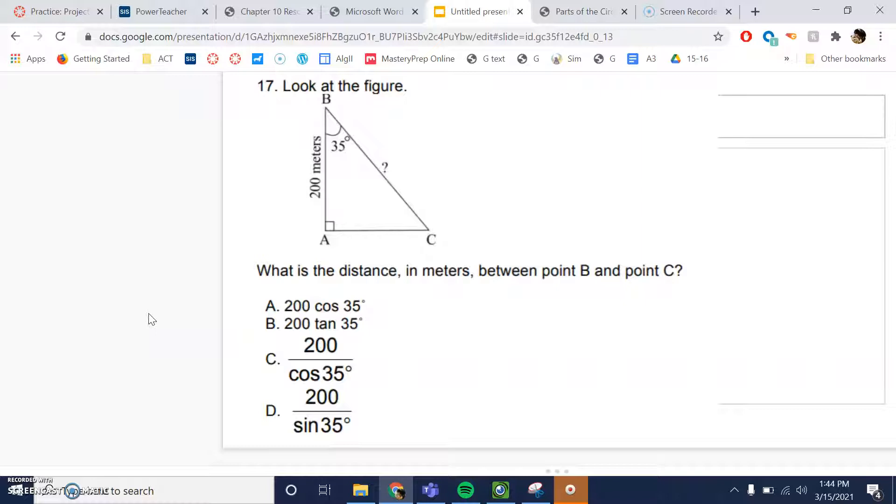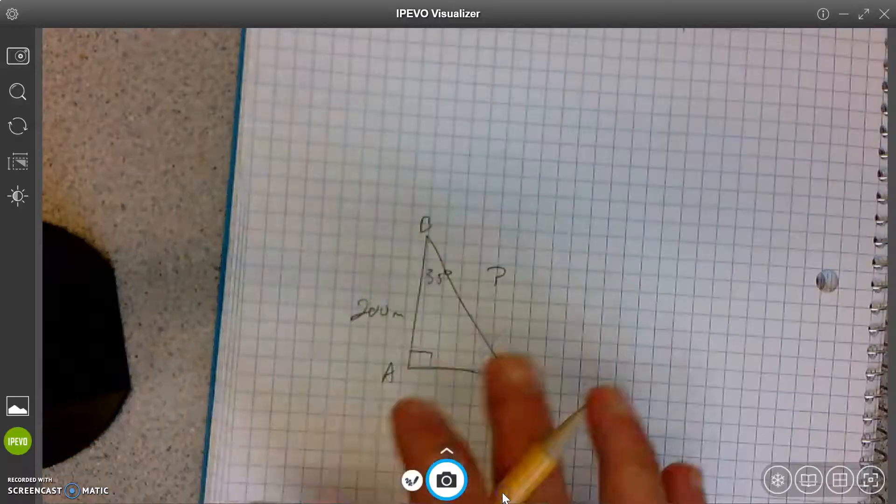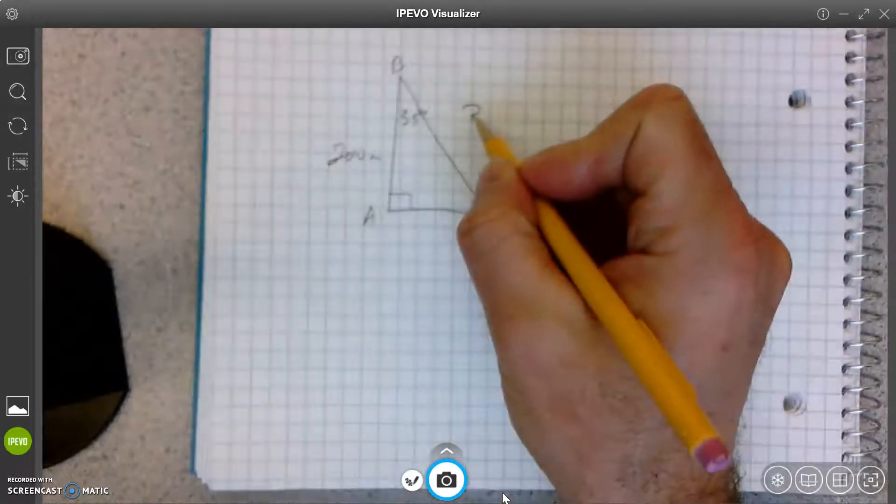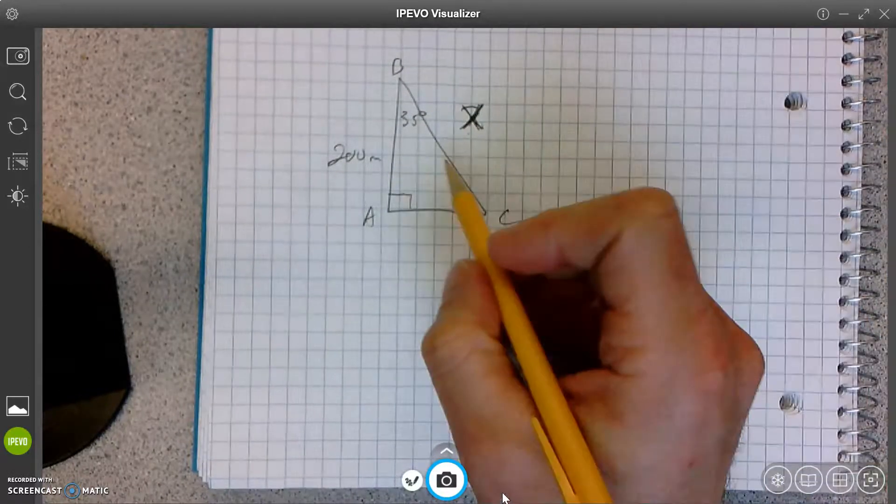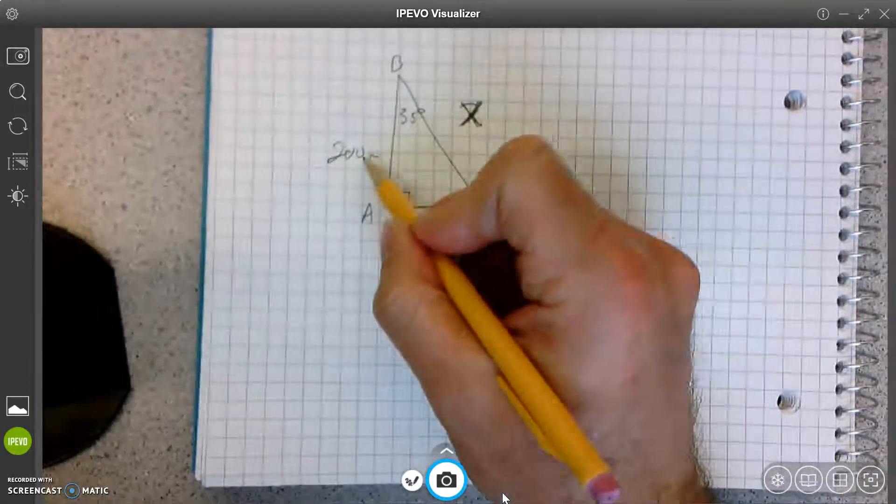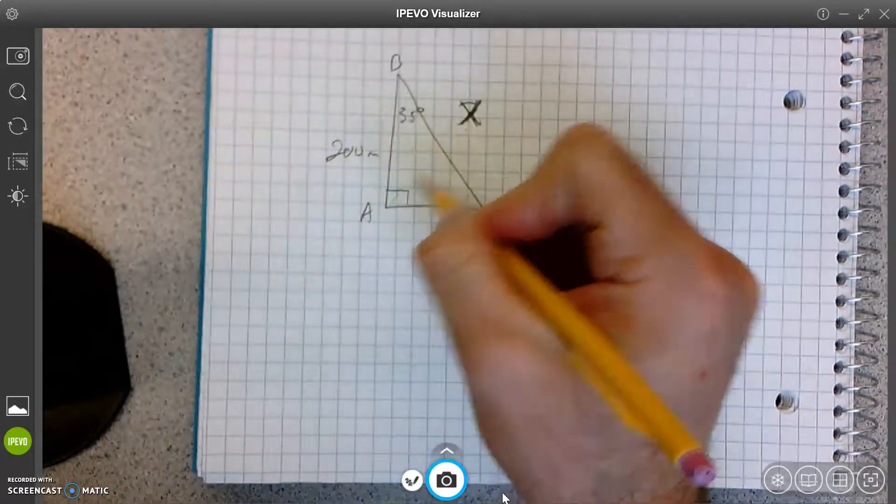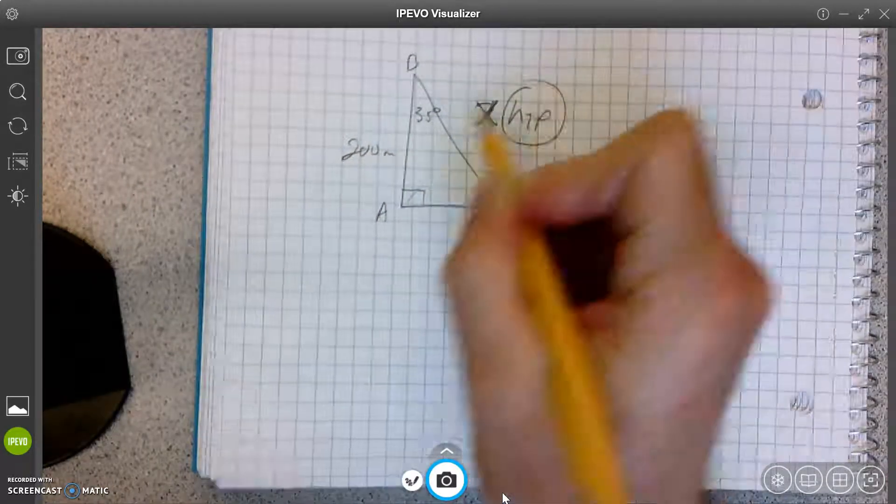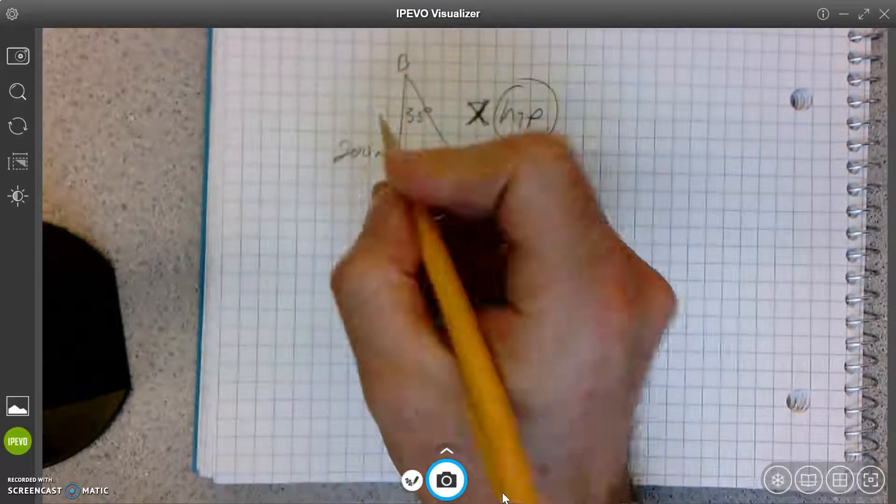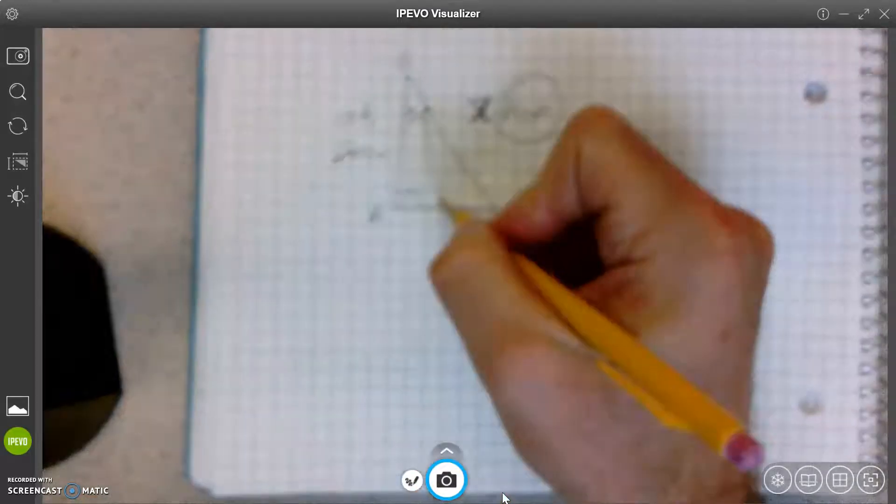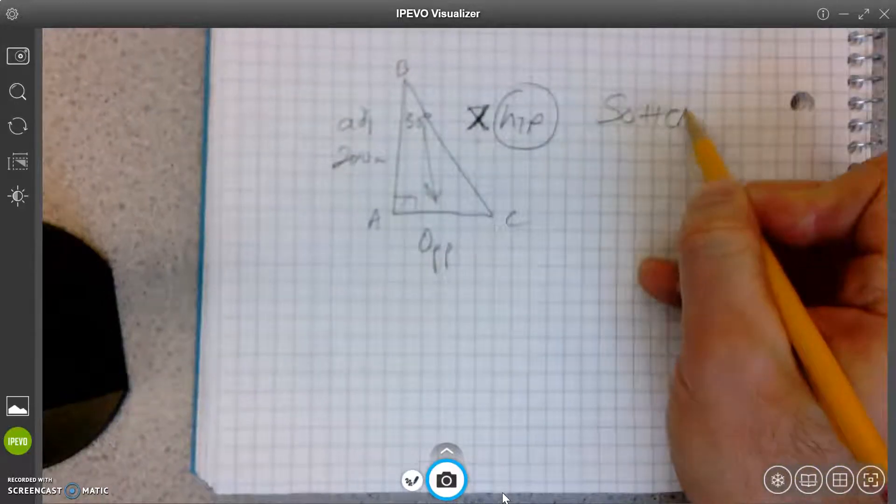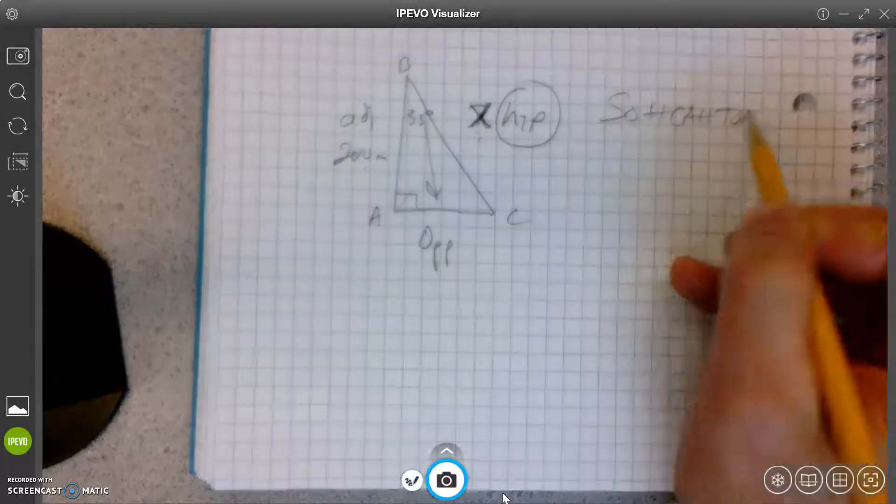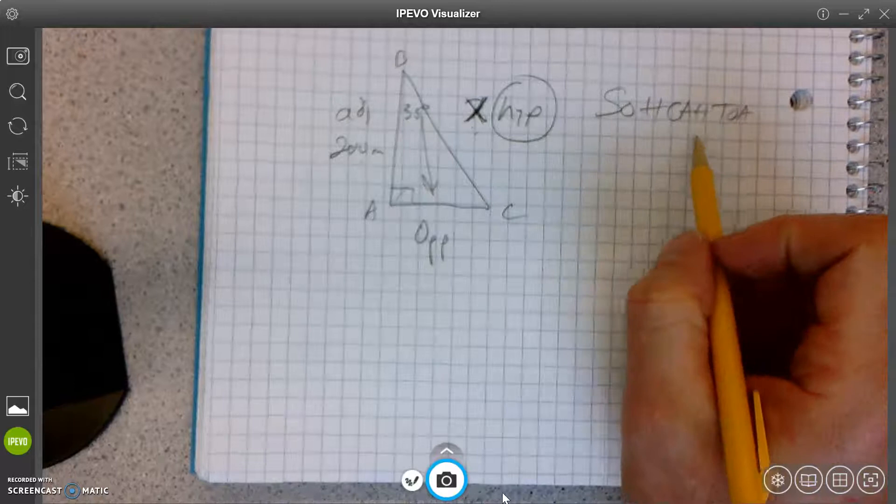All right, let's see. We've got to find out what the question marks are. So B and C right here. Okay. Is this a question mark? I don't like the question mark. I'm going to put X instead because it's easier to draw. So we have the hypotenuse. 200 is the adjacent. Yeah, I draw an arrow right here. That's the opposite. So SOHCAHTOA. Always write that every single problem.